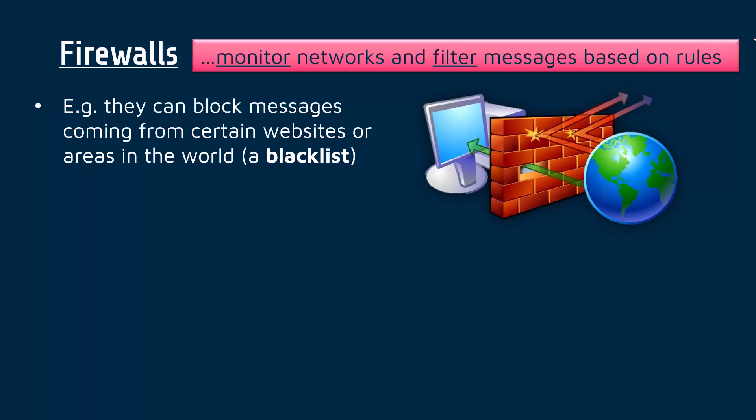These rules can be derived from a blacklist — a list of people, websites, or countries which are banned from a network. You can also have a whitelist of people who are allowed into the network. The firewall is able to block messages not adhering to these rules. It can be either a device or software — so it can be both software or hardware, which is sometimes misunderstood.